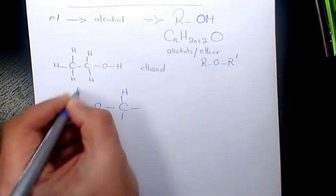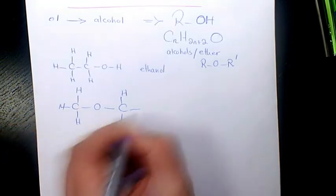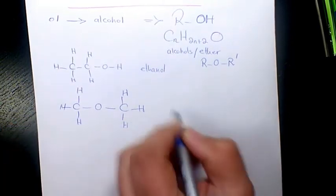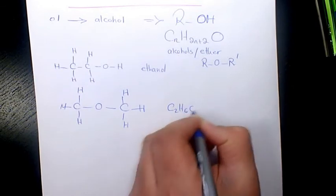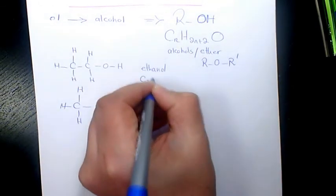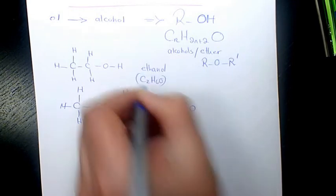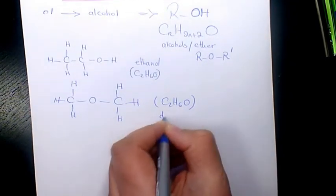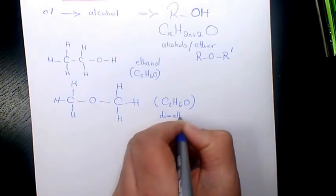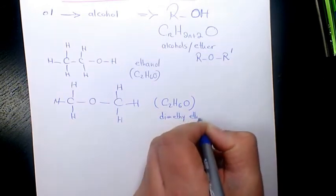So you see here, this one is also C2H6O and this one is C2H6O. So they have two different structures. This one is dimethyl ether or DME.